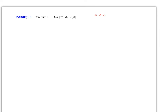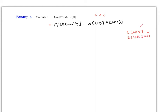By definition, Cov(Ws, Wt) equals E[Ws · Wt] minus E[Ws]·E[Wt]. But remember the expected value of the Wiener process equals zero, so these two terms are zero. Therefore this is just E[Ws · Wt].